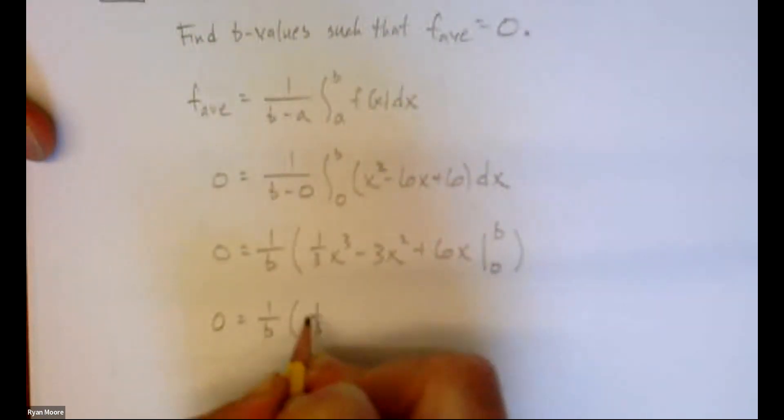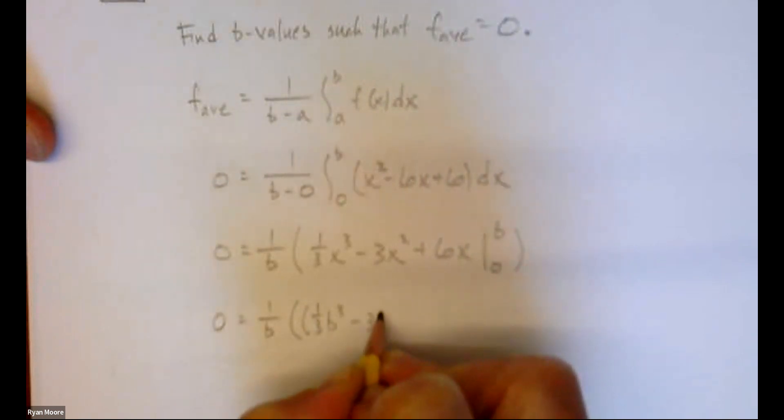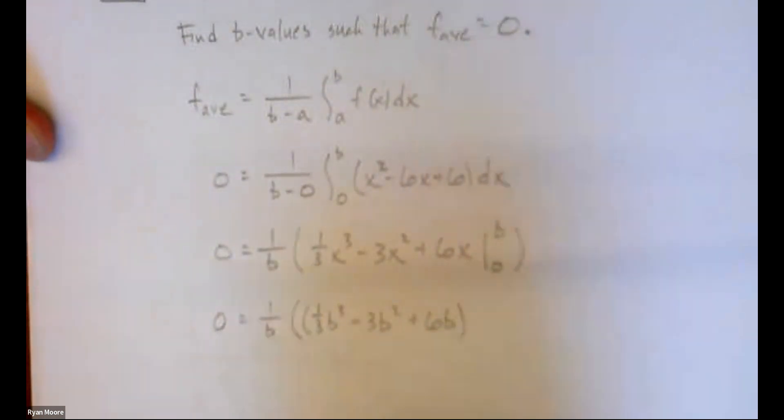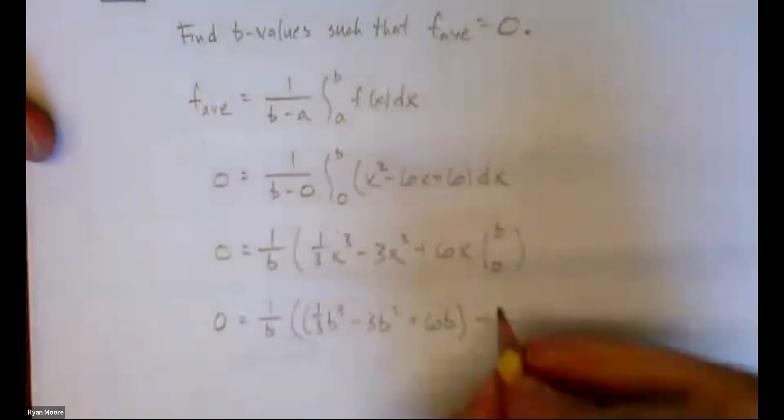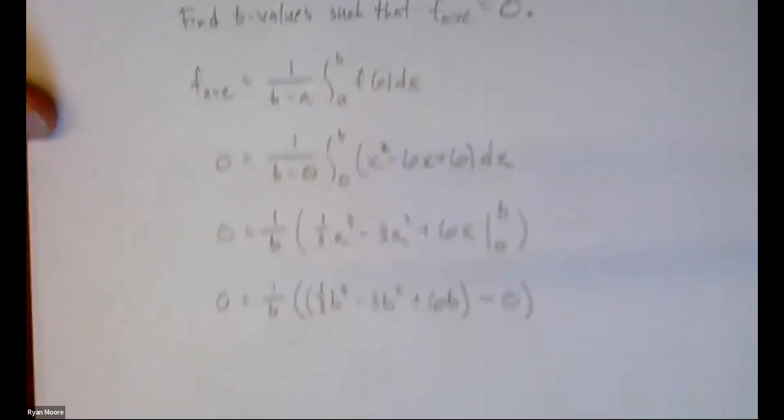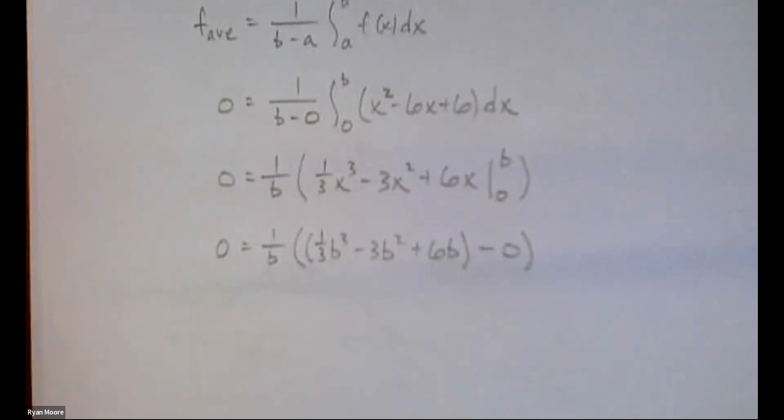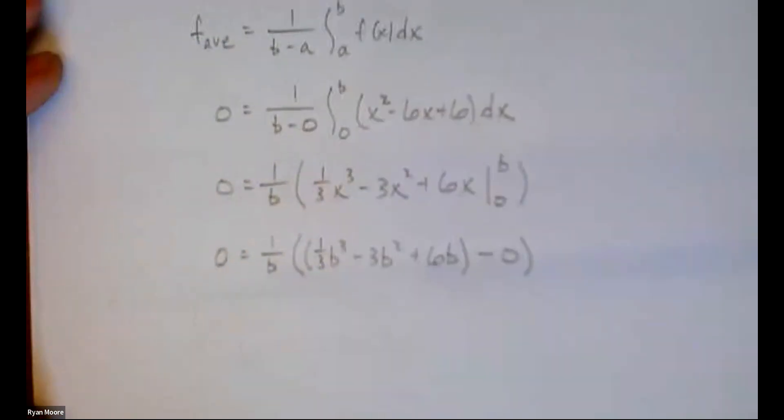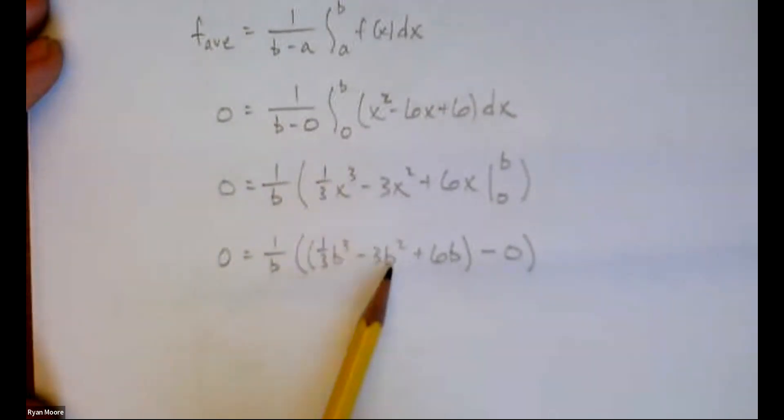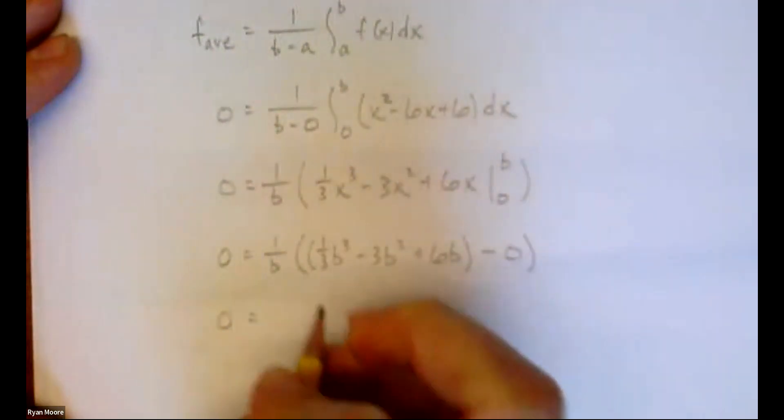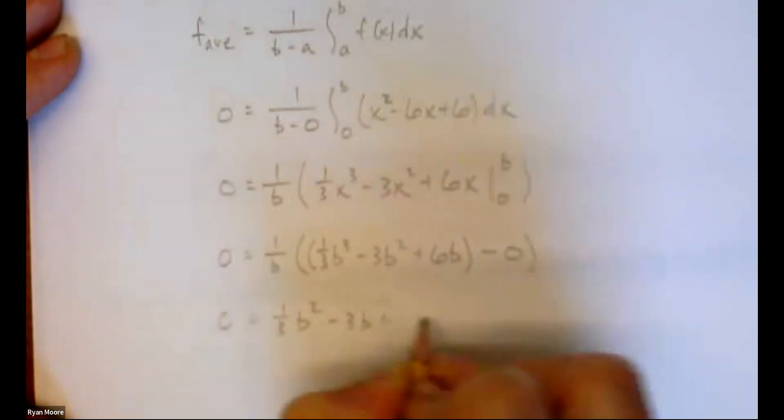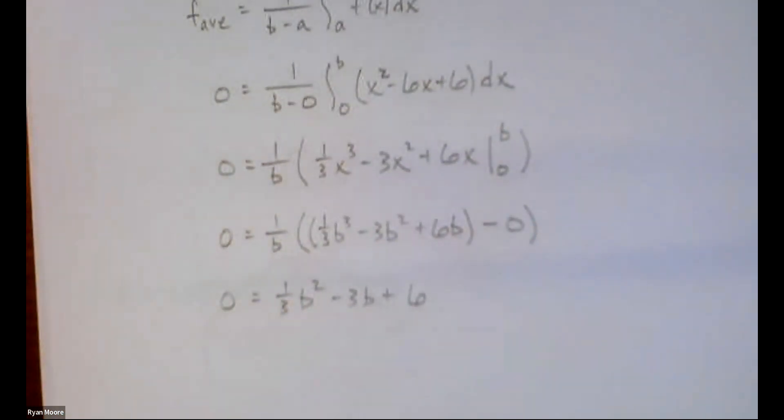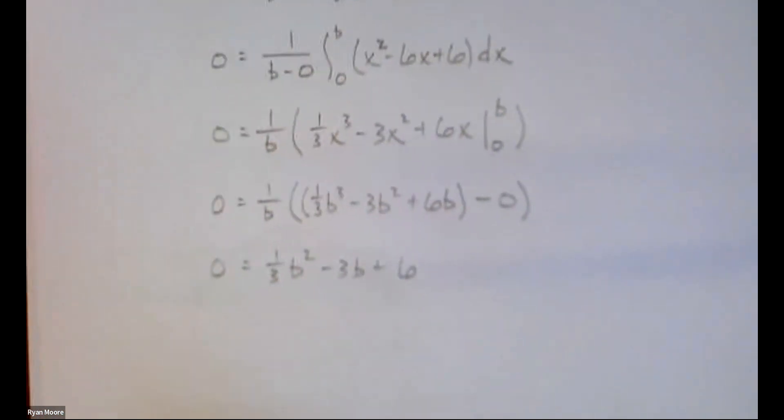So we'll have one third b cubed minus 3b squared plus 6b minus, and it so happens at plugging in 0, we got a polynomial, going to be 0. Looking good. So the minus 0, we can just kind of disregard. Let's distribute the 1 over b to each term. We'll end up with one third b squared minus 3b plus 6. Simplifying.